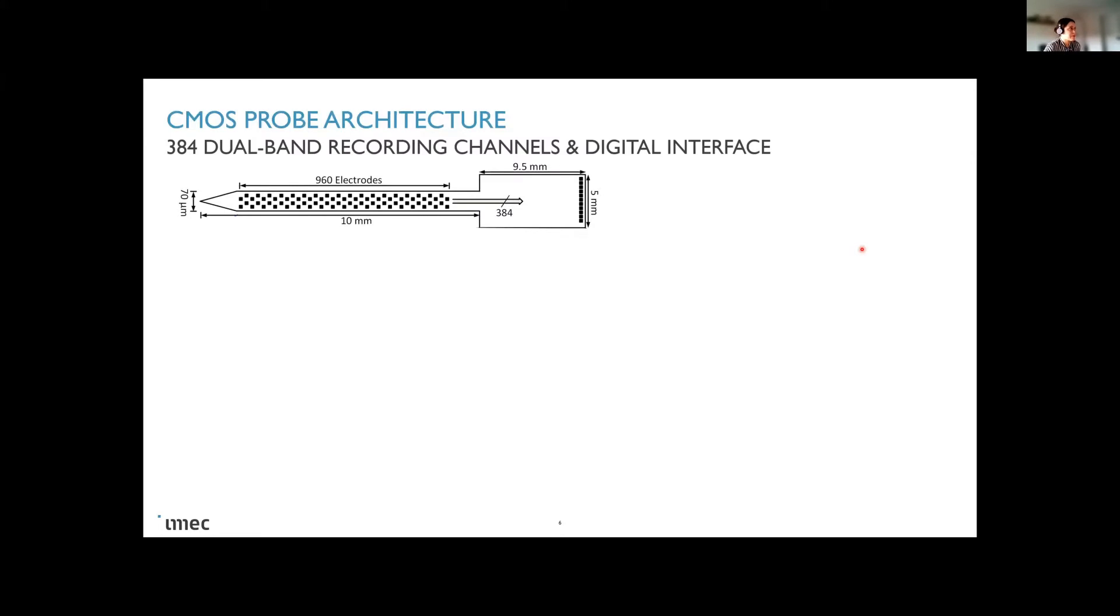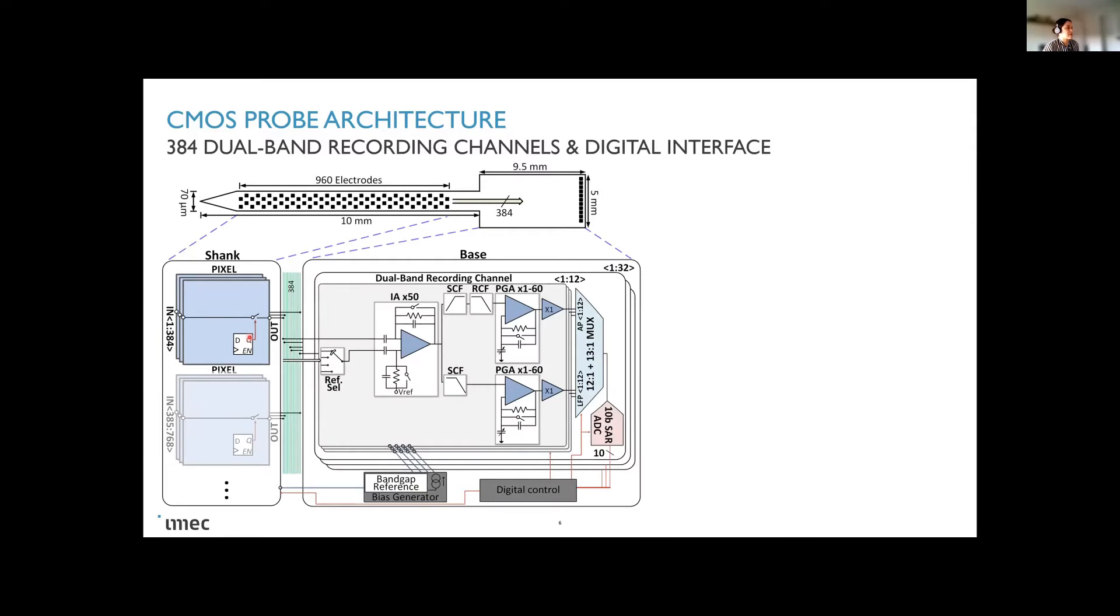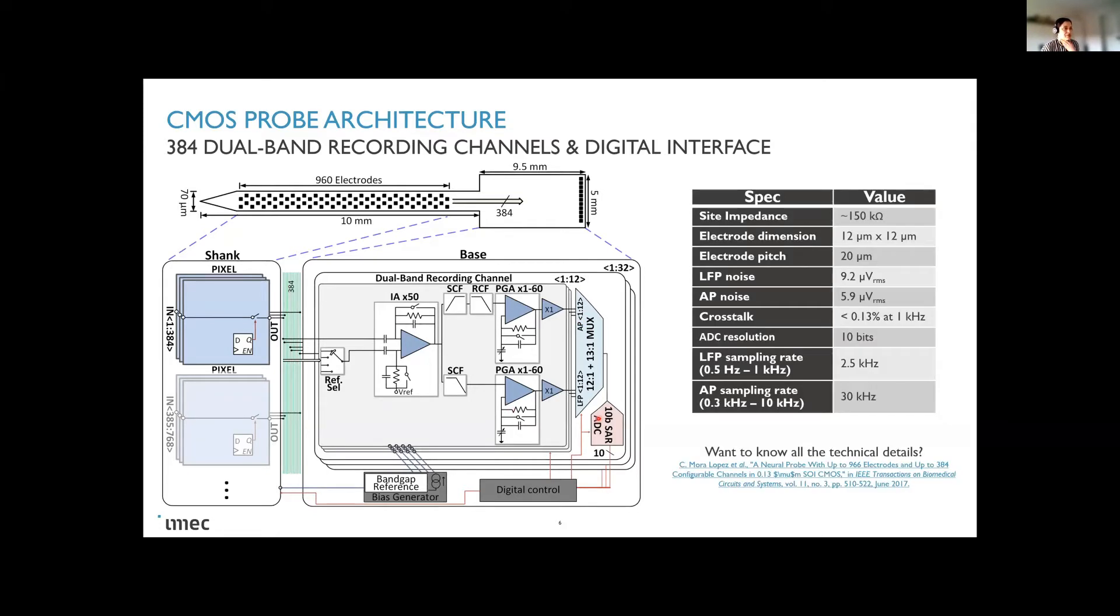So I will very briefly mention what's the architecture of this probe. Here you have some dimensions, we saw some pictures. As I described in my previous slides, what we have in the pixels is just a switch and a local memory or a shift register. And this gets connected in the base to our low noise amplification that provides a gain of 50. And then some filters and programmable gain amplifiers for both the AP and LFP channels. And these channels get multiplexed and processed by a 10 bit ADC.